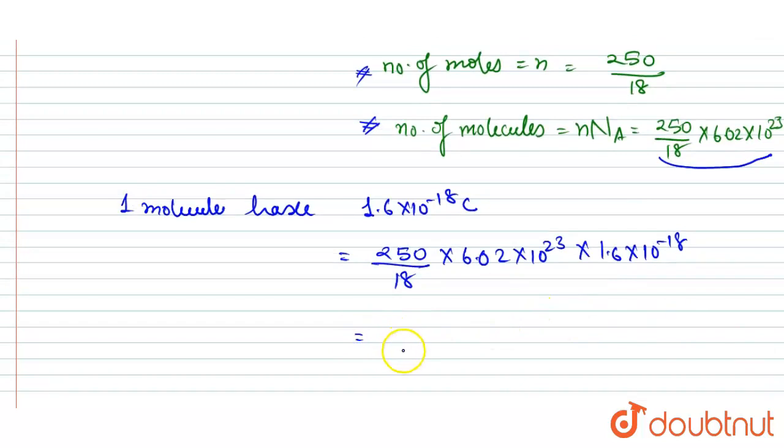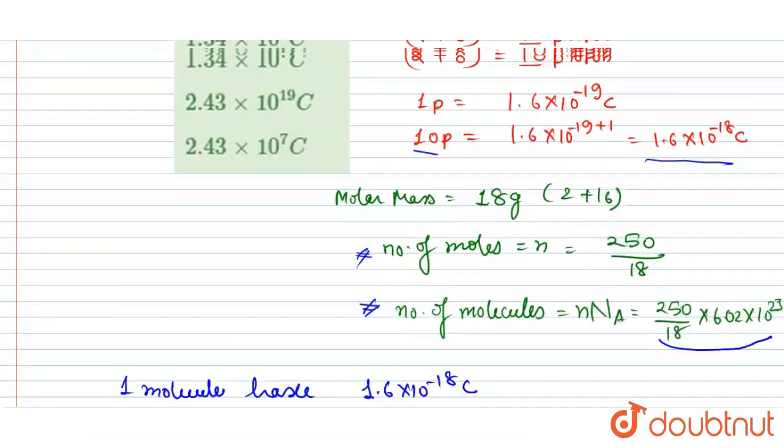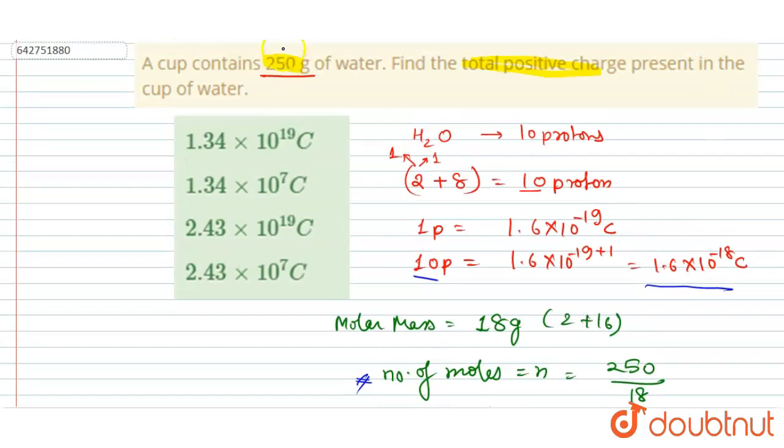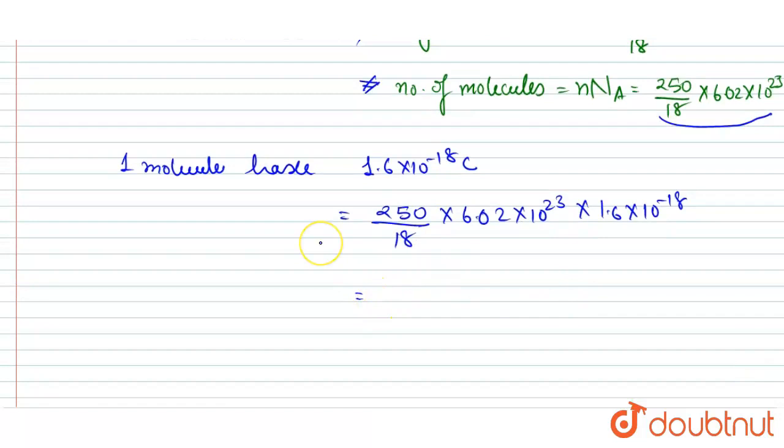If you solve this, you will get the net positive charge in 250 grams of water as 1.34 × 10^7 coulombs. And this will be the answer to this question. Thank you.